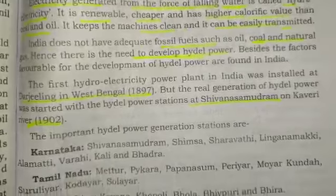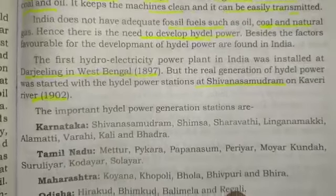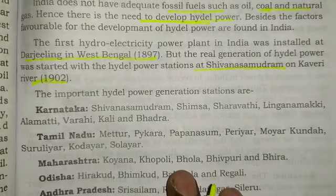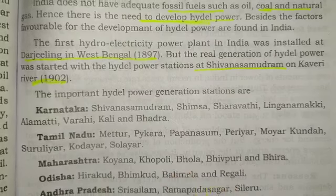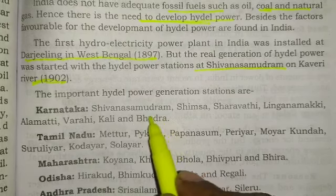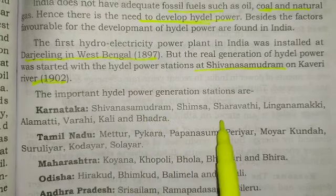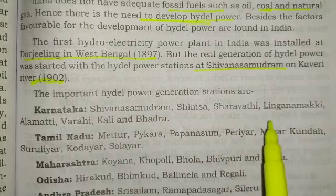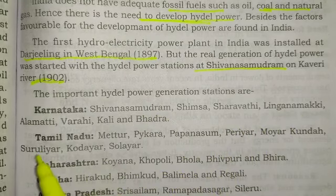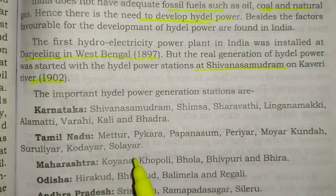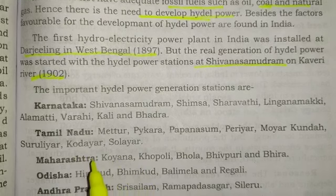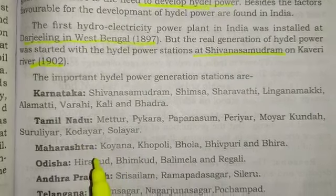The important hydroelectric power generation stations in India include, in Karnataka: Shivana Samudra, Shimsha, Sharavati, Linganamakki, Alamatti, Varahi, Kali, and Badra.